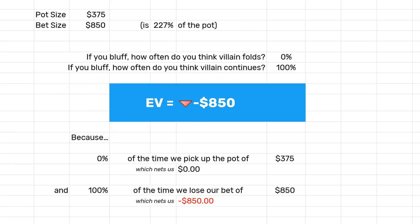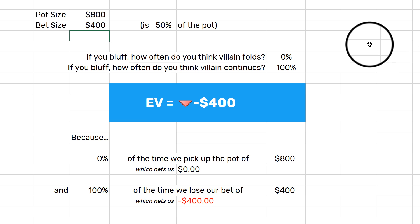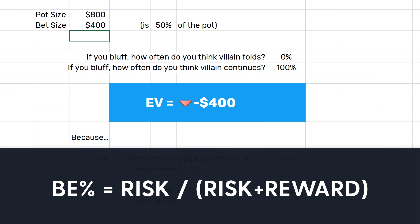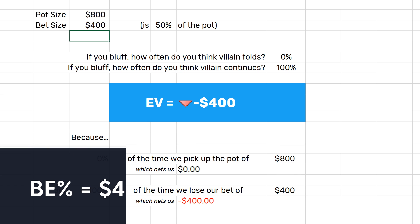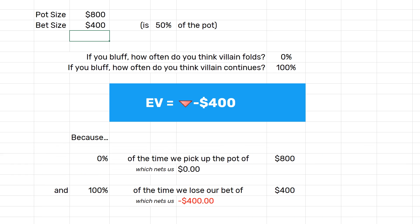Per the original question, we are betting half pot on the river and we think our opponent is going to fold one third of the time. Let's fill in some basic numbers: the pot size on the river is $800, and if we're betting half pot that's $400. The break-even formula is risk divided by risk plus reward — so $400 divided by $400 plus $800 equals $400 divided by $1,200, which equals one third.